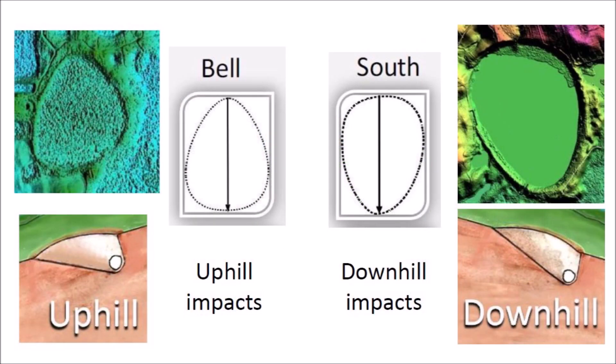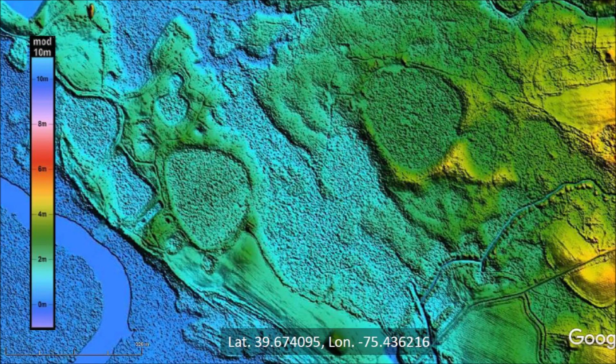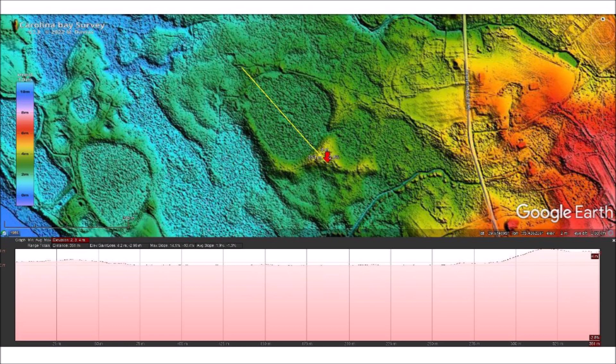The Bell archetype Carolina Bays are not as common as the South archetypes, perhaps because the coastal plain tilts toward the Atlantic Ocean. These bell-shaped Carolina Bays are located in New Jersey, about 2 miles east of the Delaware River. The terrain is generally inclined westward toward the river, so impacts in this area would have been on the uphill side of the terrain. A transect across a bell-shaped bay shows just a very slight elevation difference between the rims and the center of the bay.